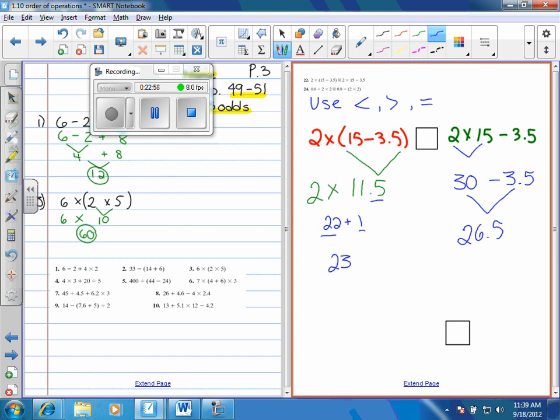Perfect. So now you're going to compare 23 to 26.5. So in the box, you have to make your sign go which way? Where's the pointy part going to go? To the left. You guys understand that? Okay. So that's how you do your homework.